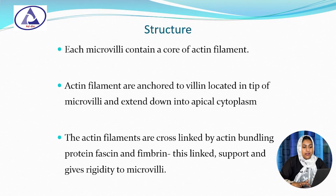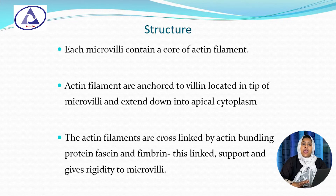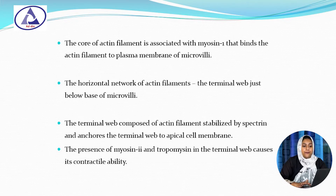Within the microvilli, there is a core of actin filaments. The actin filaments are anchored to villin, which is located at the tip of the microvilli and extends down into the apical cytoplasm. The actin filaments are cross-linked by actin bundling proteins called fascin and fimbrin. These links support and give rigidity to the microvilli. The core of actin filaments is associated with myosin 1, which binds the actin filaments to the plasma membrane of the microvilli.